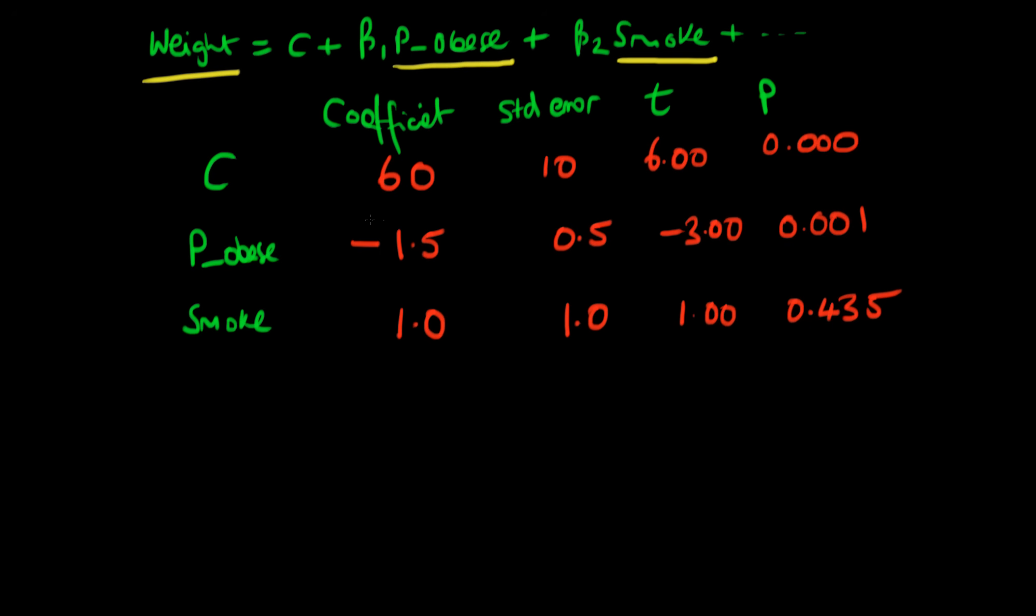And we run our regression on our sample of data and this is the sort of output which we get. We got a matrix of values and in theory we get them for all the other variables which we've included in our regression as well. But I'm just including these first three just so we can look at those.